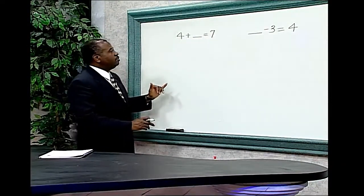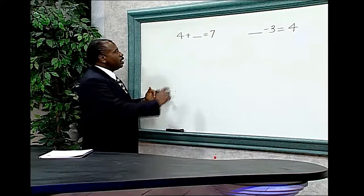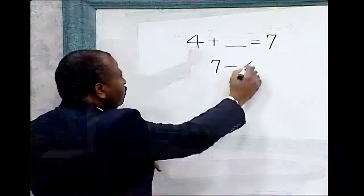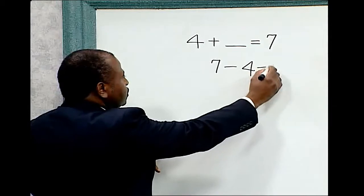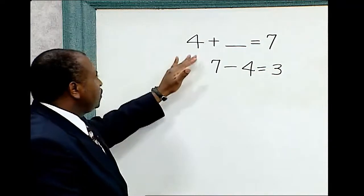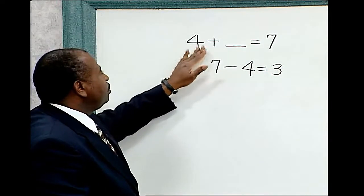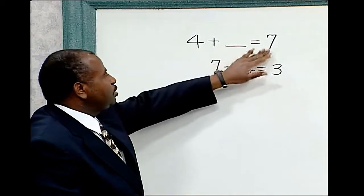One of the ways we can find a solution to this problem is by subtracting 7 minus 4 equals 3. Therefore, 4 plus 3 equals 7.